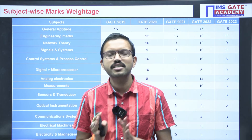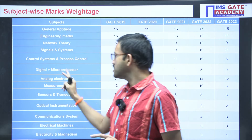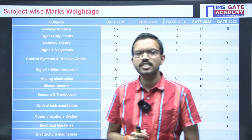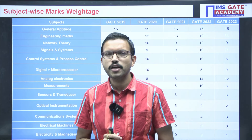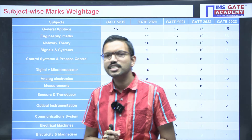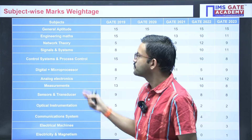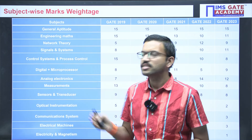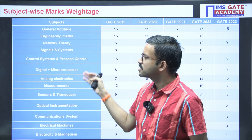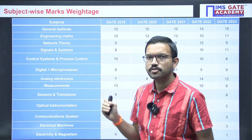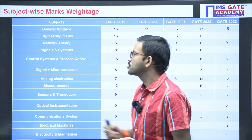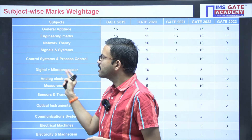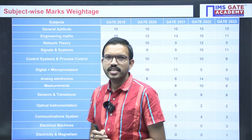In the instrumentation paper, digital along with microprocessor, the weightage is usually around 10 to 12 marks. But in this particular year, regarding digital and network theory subjects, these two subjects had their weightage come down a little. Regarding digital and microprocessor together, only around 5 marks were given.